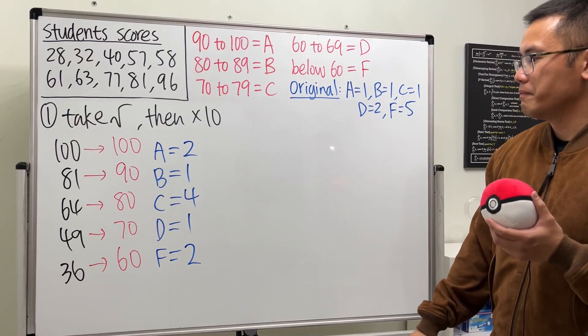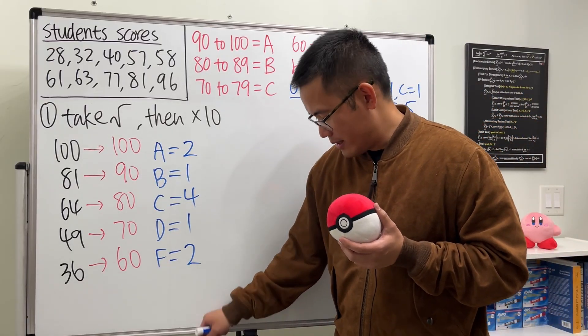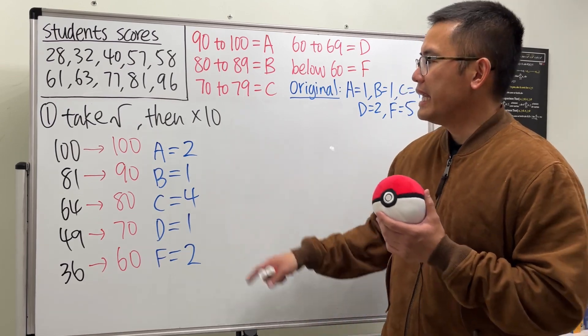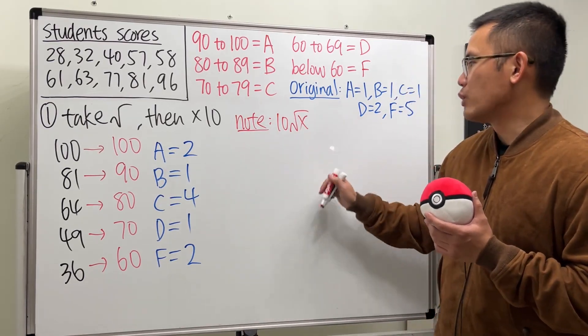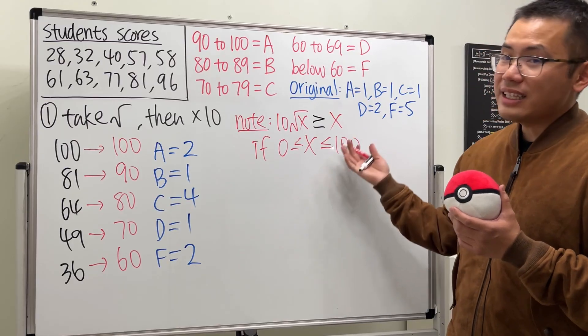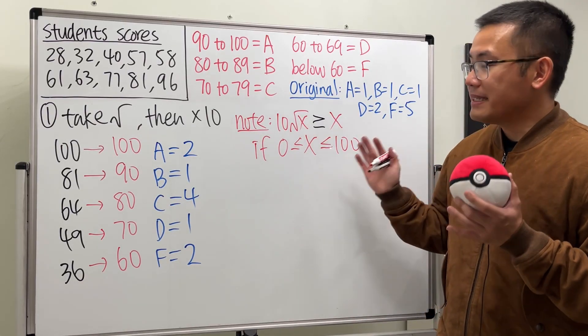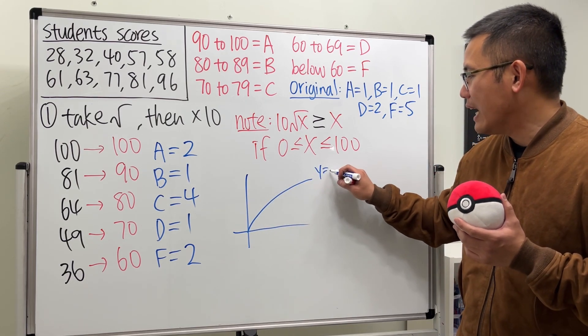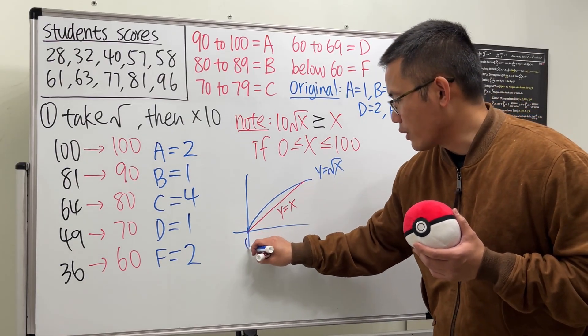So take a look and compare with the original. Of course, this is much better. But before we do the next one, let me just tell you guys about why this works. So when we take a square root of a number, let's say the original is just X, and then multiply by 10, we can write that as 10 times square root of X. And in fact, this right here is bigger than or equal to X, if X is in between 0 and 100. And that's why this right here can help the students. But now you might be wondering, how in the world did they come with this formula? Well, I'm not exactly sure, but this is just going to be my guess.